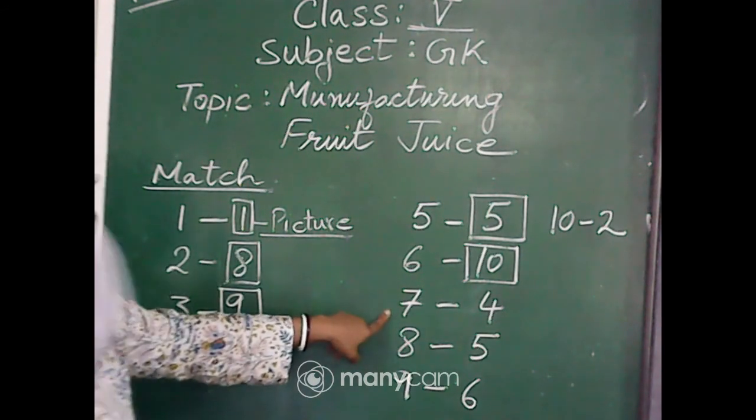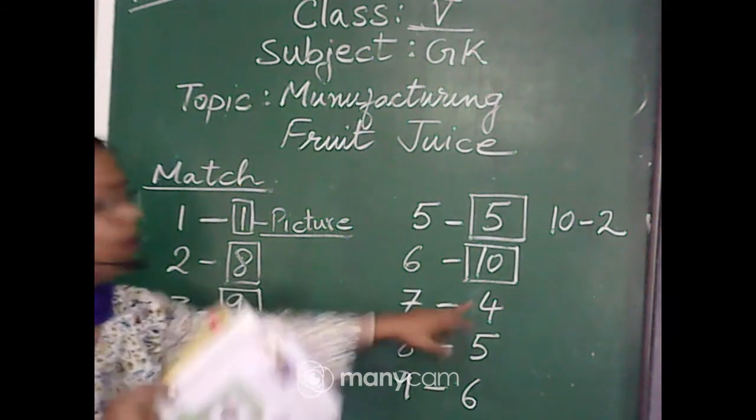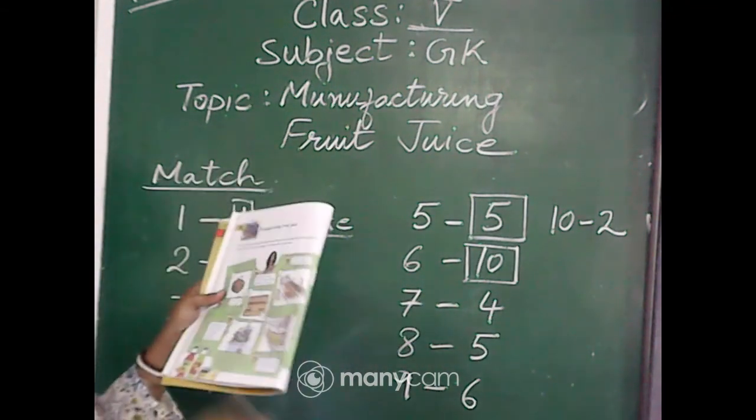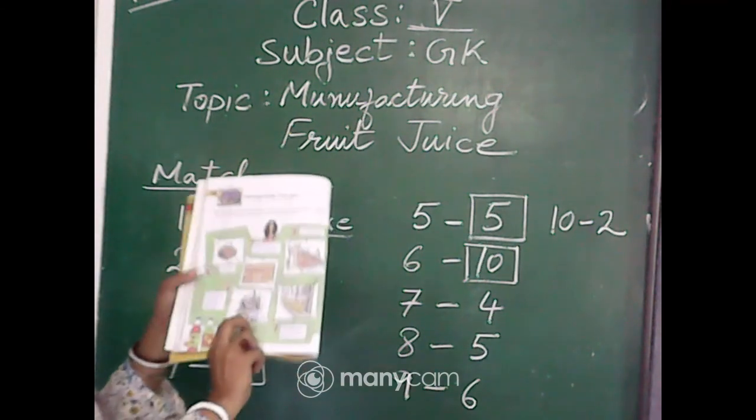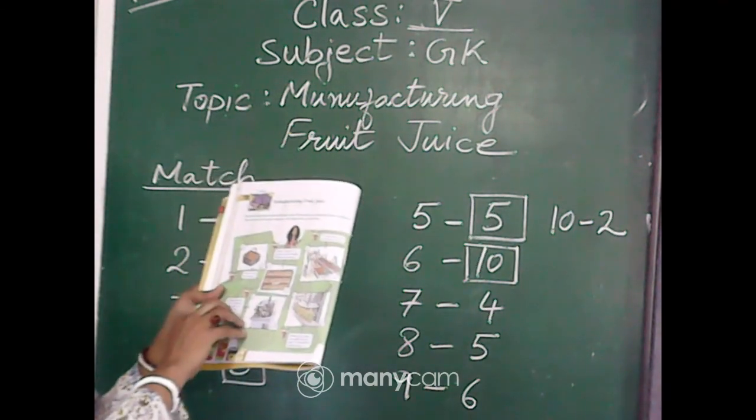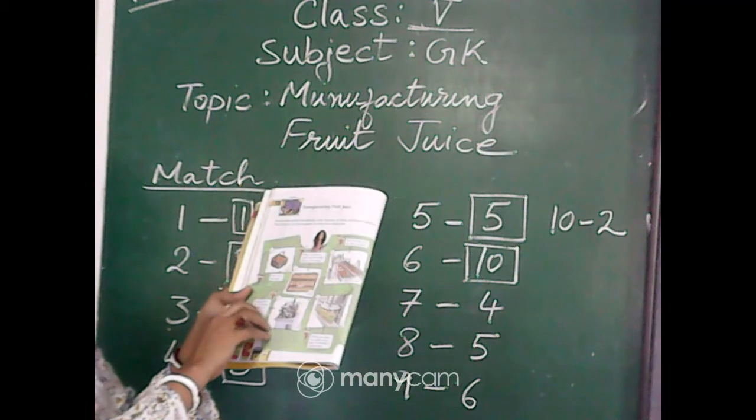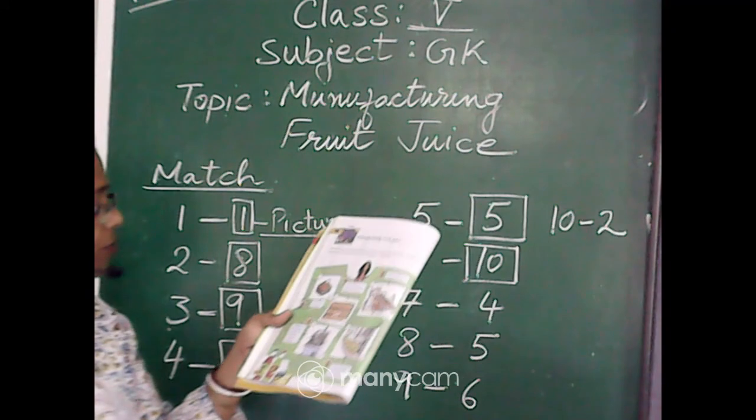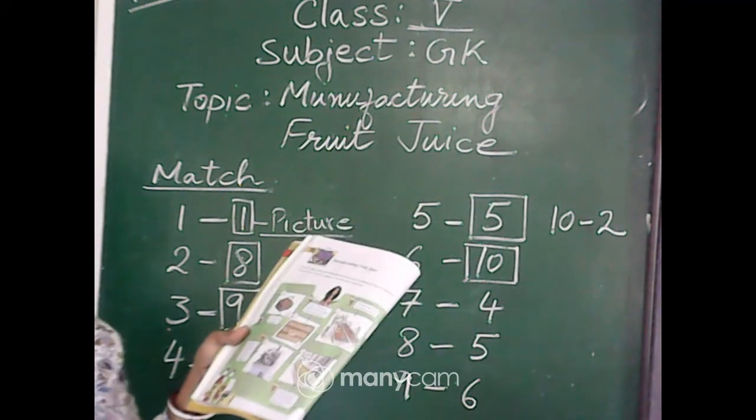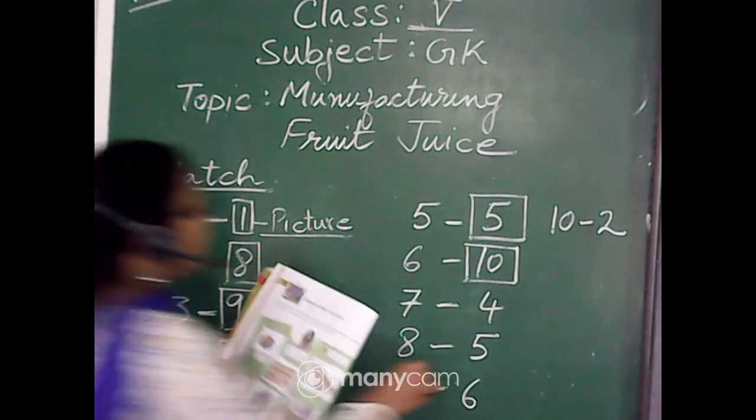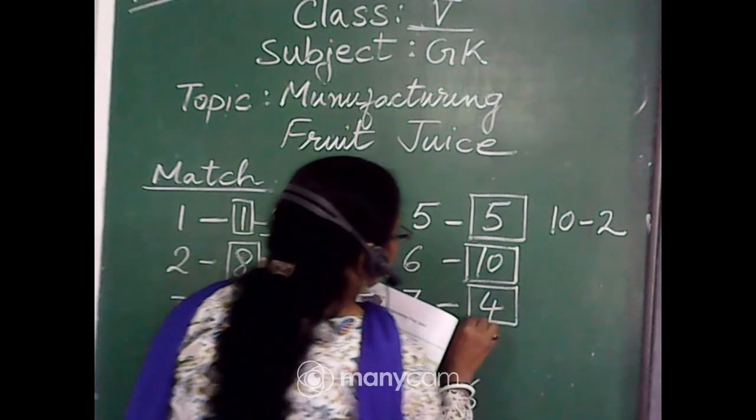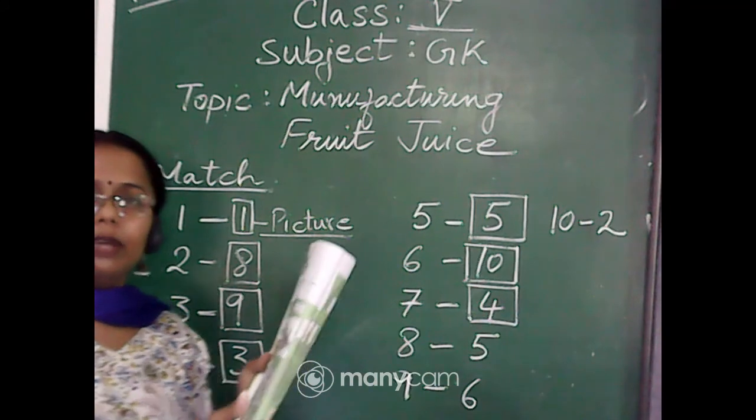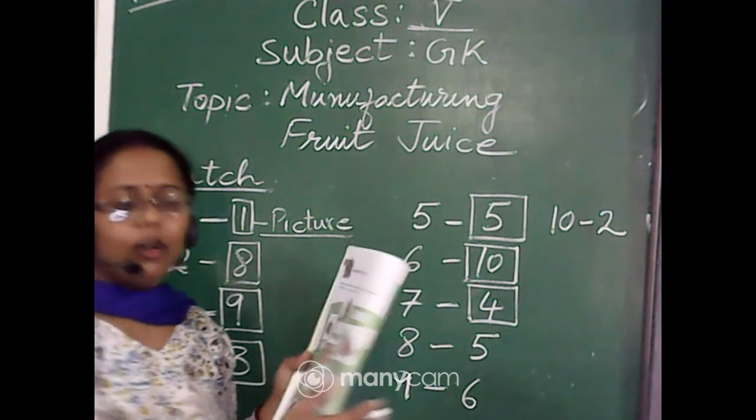Next is number 7, which is picture number 4. Here a machine has been shown where pasteurization, that is heating at 80 degrees to 90 degrees centigrade for 15 minutes, is done at this stage. So here the heating is done for pasteurization so that it can be preserved properly for at least a month or two.